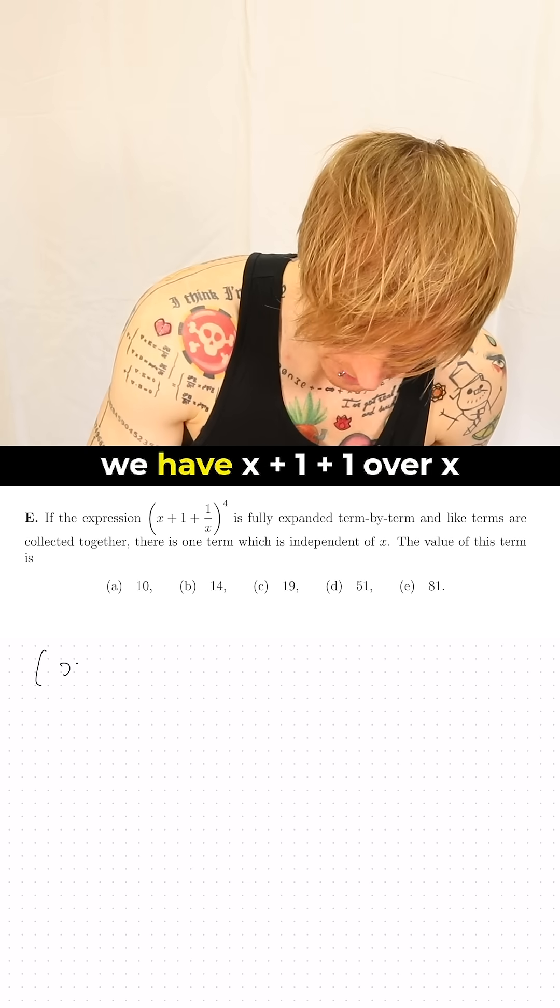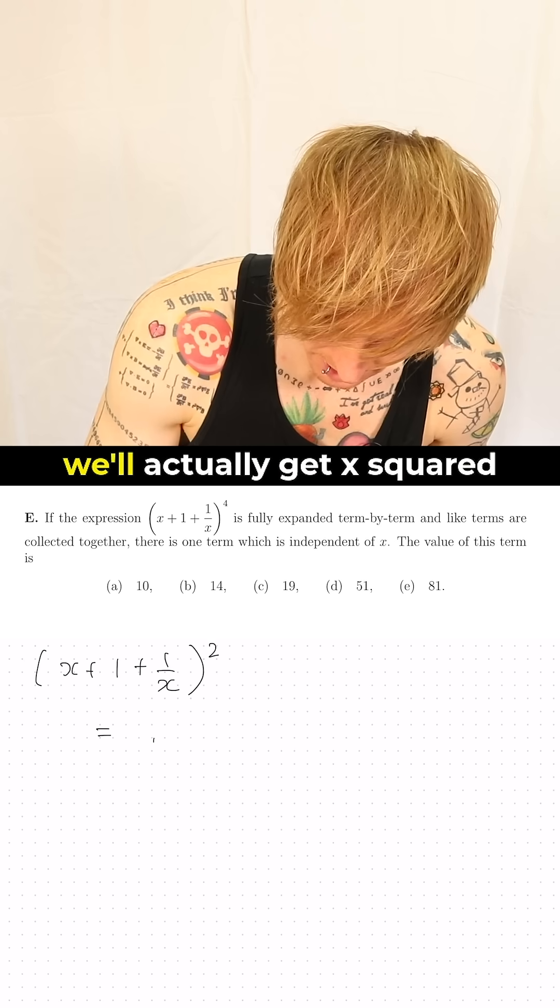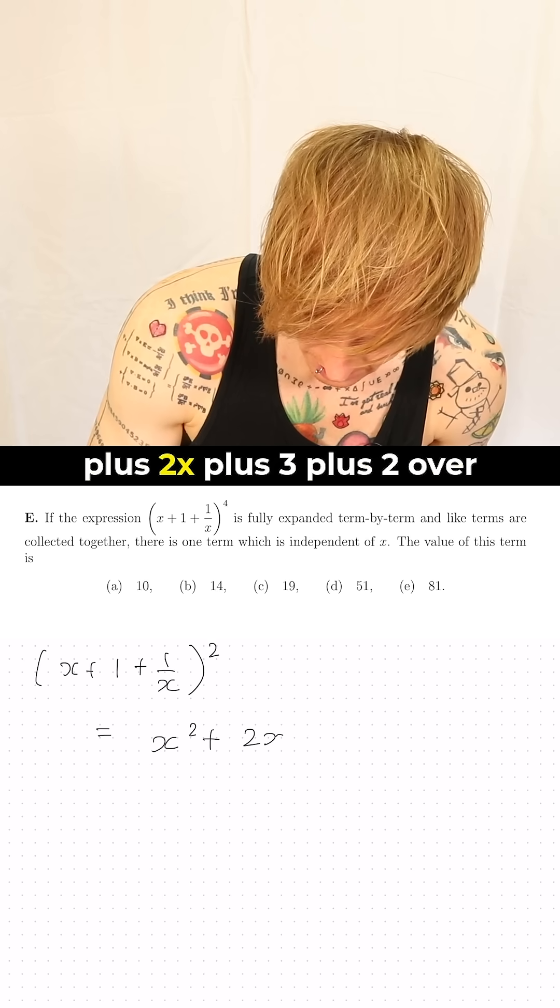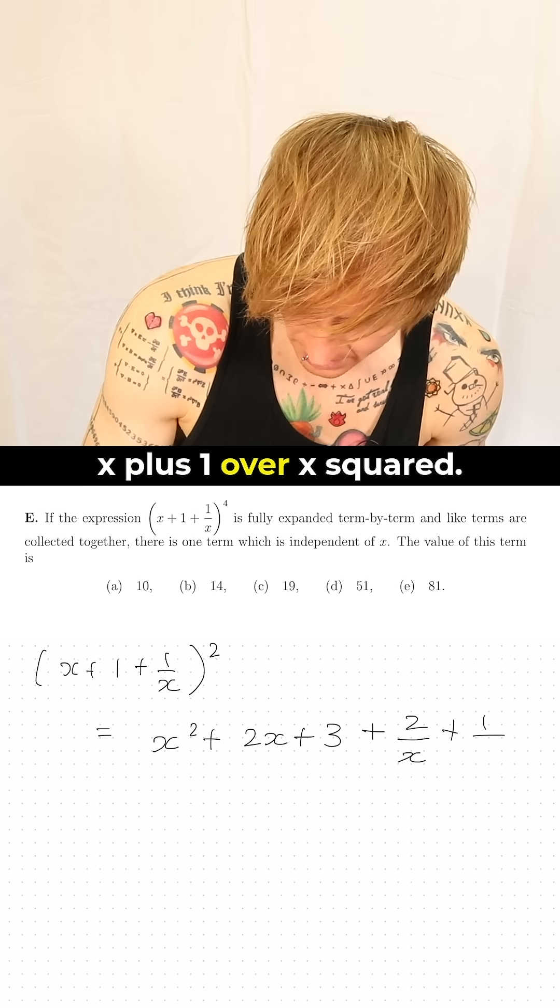So doing that we have x plus 1 plus 1 over x and when we square that we'll actually get x squared plus 2x plus 3 plus 2 over x plus 1 over x squared.